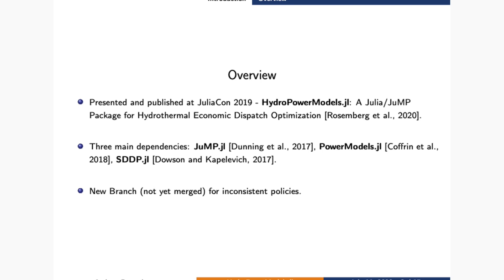HydroPowerModels.jl is a Julia/JuMP package for hydrothermal dispatch optimization. It was presented and published at JuliaCon 2019 and you can find the link to the previous presentation and related article at the GitHub page. The three main dependencies are JuMP.jl, an efficient layer for mathematical optimization modeling; PowerModels.jl, which parses network data and creates the related optimal power flow problem in JuMP; and SDDP.jl, which handles the solution method for multistage stochastic problems. The work we are going to present here was done on a new branch which is not yet merged but will be soon.